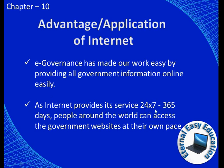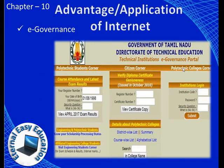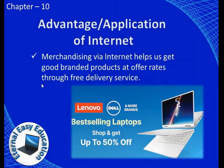Since the internet provides service 24x7, 365 days a year, people around the world can access government websites at their own pace and place. For example, the Government of Tamil Nadu Directorate of Technical Education website allows you to search and register online without moving from one place to another. Another application is merchandising — the internet helps us get good branded products at offer rates through free delivery service.